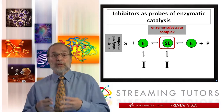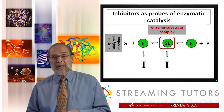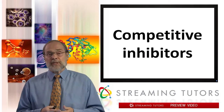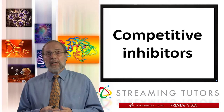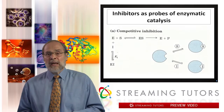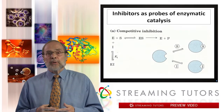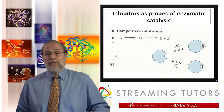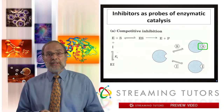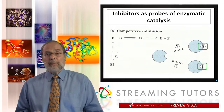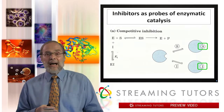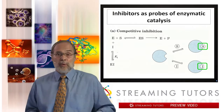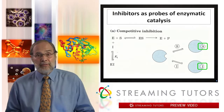It turns out that studying the kinetics of those inhibitors will tell us a lot about how they're working in detail, and from that in turn we can draw some pretty spectacular inferences. The first, and in some ways conceptually simplest, class of inhibitors are called competitive inhibitors. The enzyme binds substrate at a particular site, and a competitive inhibitor — symbolized I here — binds to the same site in competition with the substrate, hence the name.